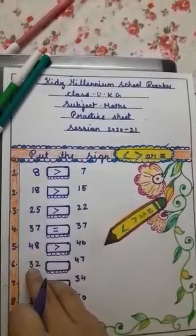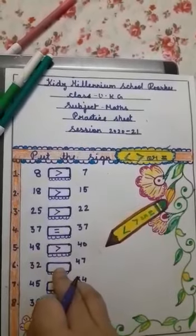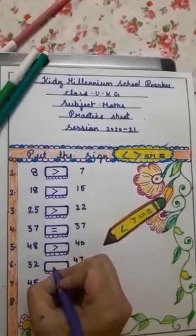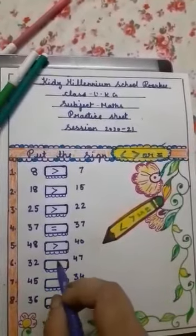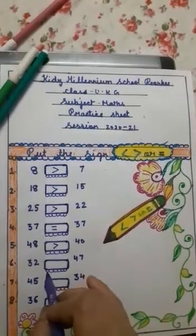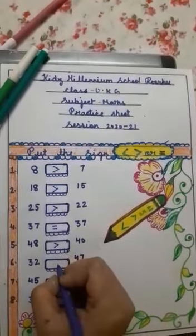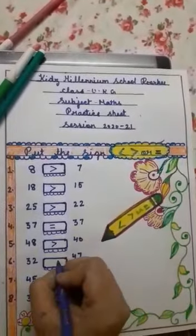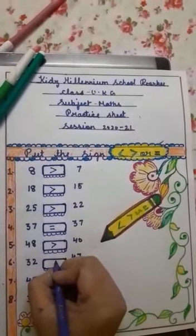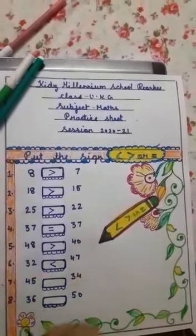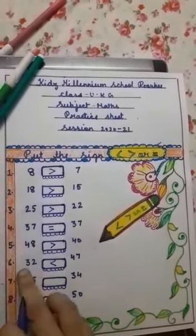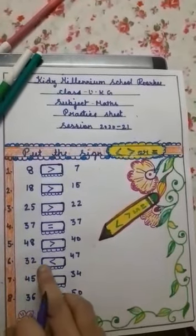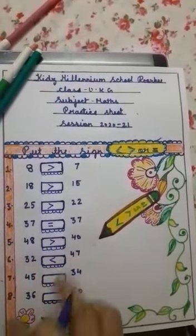Question number 6: 32 blank space 47. Comparatively, 32 is less than 47.